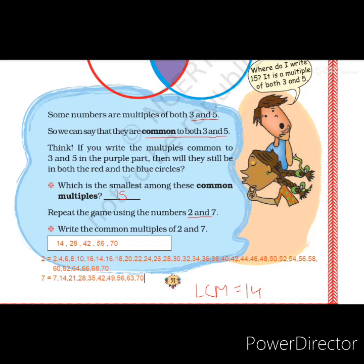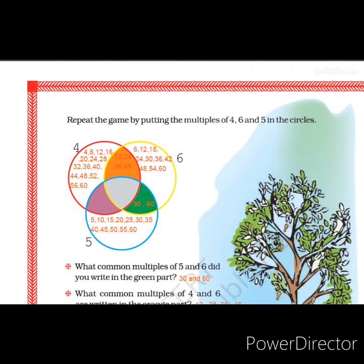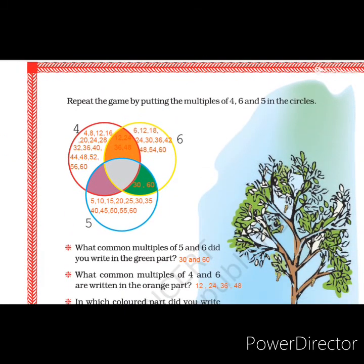Now we move to page number 92. Here we have the same game but for 3 numbers: 4, 5, and 6. We have to find the multiples of these 3 numbers, and 3 circles are given.